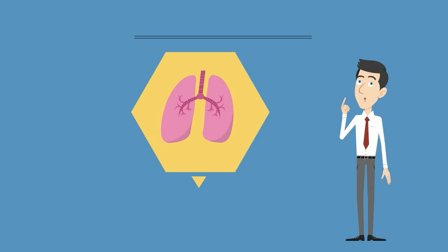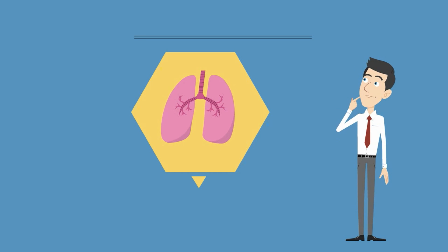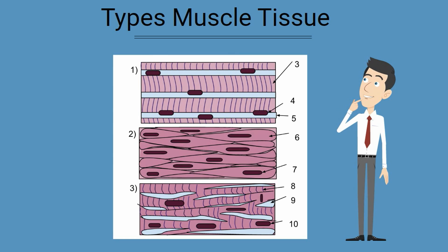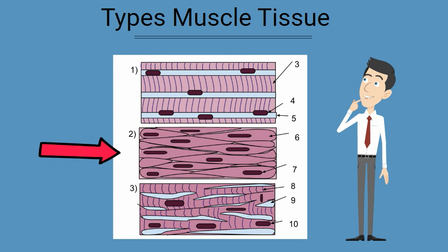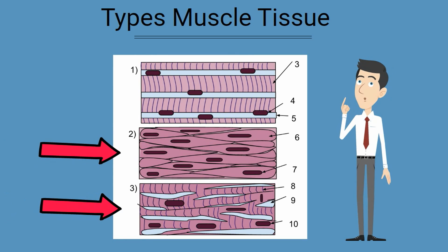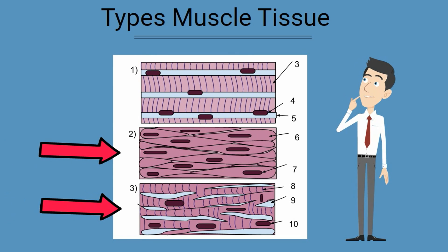There are three main types of muscle tissues: Smooth, Cardiac, and Skeletal.